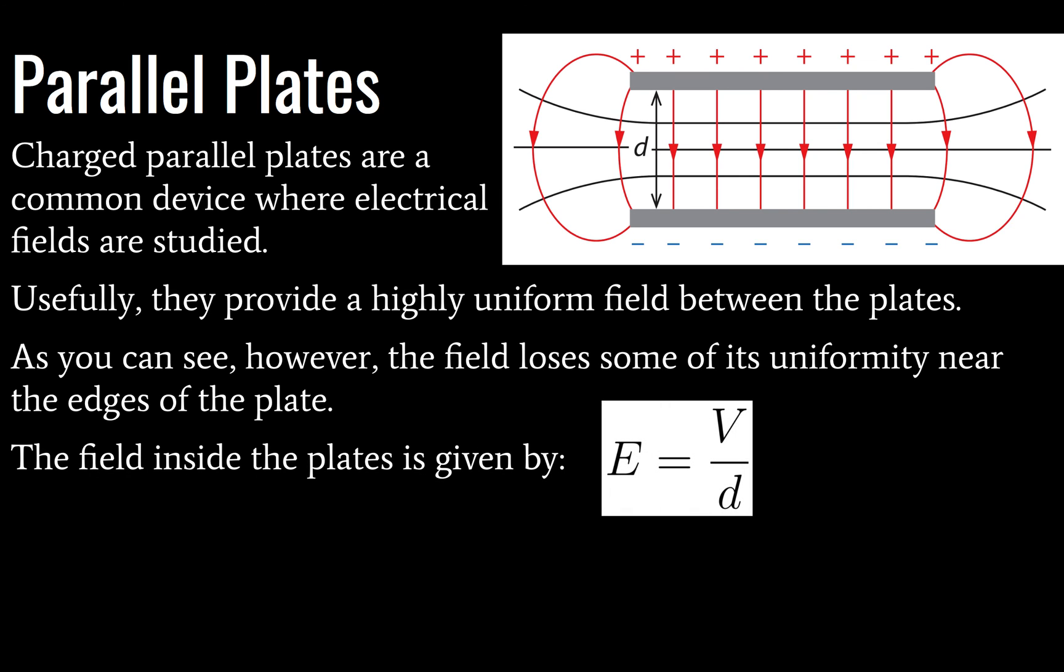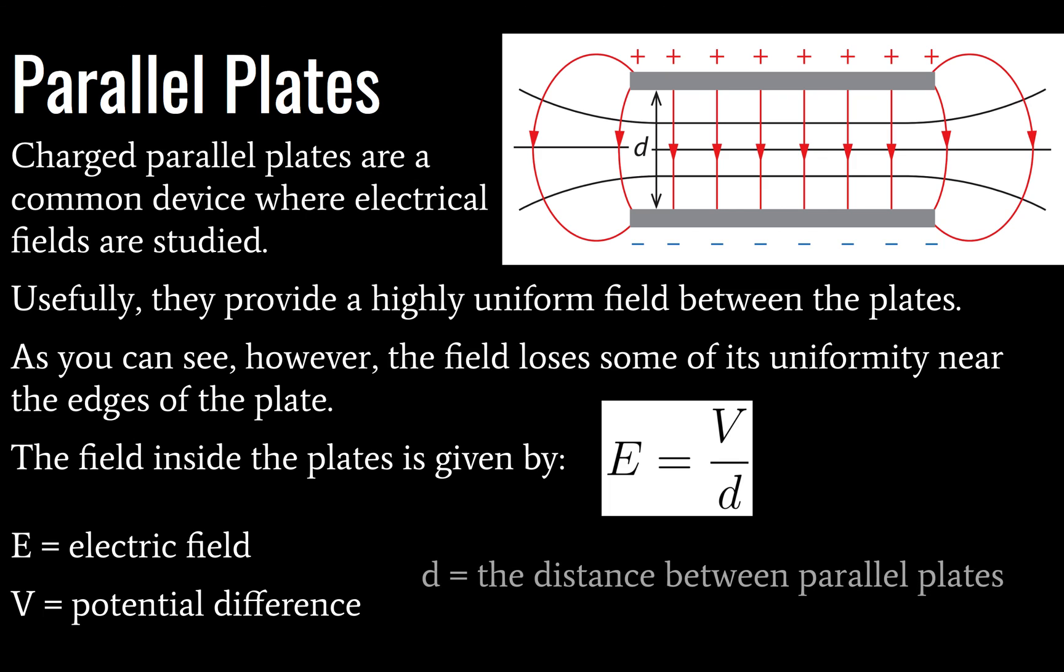Inside the plates, between the plates, the field between the plates is given by E is equal to V divided by d, and of course we will define those variables. Where E is electric field, V is potential difference, and d is simply the distance between the plates.